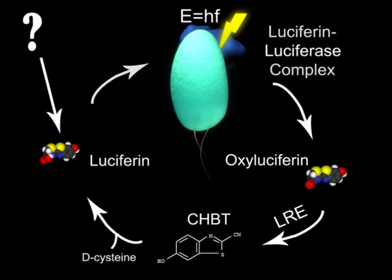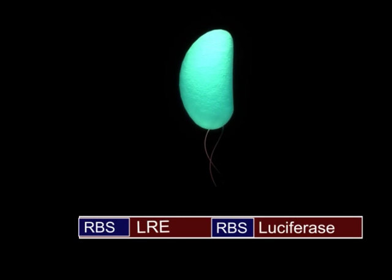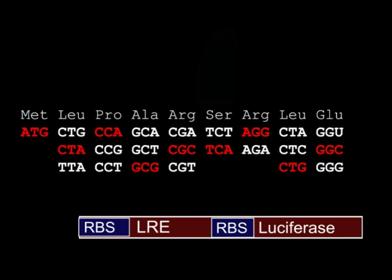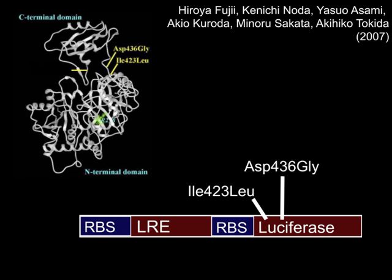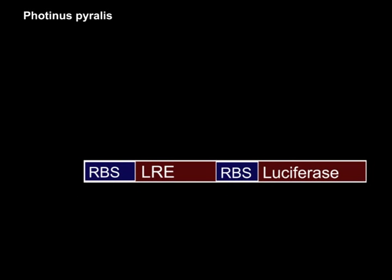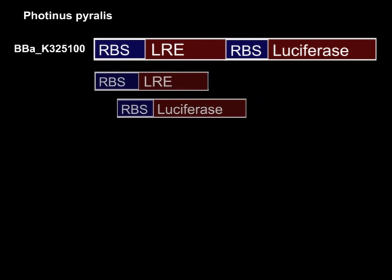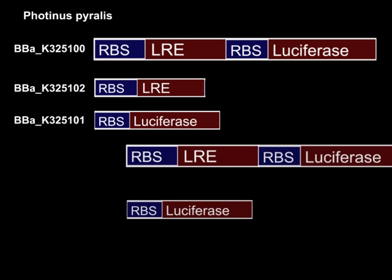The Cambridge team designed an operon that allows the luciferin cycle to take place in bacterial cells. We took the sequences of the North American firefly's luciferase and LRE genes, and DNA 2.0 synthesised them for us after codon optimisation for expression in E. coli. In our research, we had learnt about a mutant which displayed ten times higher substrate affinity than wild type, involving three amino acid changes. We used a technique called Gibson assembly to separate the luciferase and LRE from our operon, and submitted these as separate biobricks. We also placed both the operon and the luciferase gene under a PBAD promoter for characterisation and submitted these as biobricks.